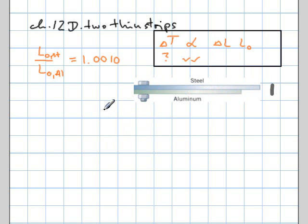So when everything is done, the length expanded by the steel equals the length, the total length, expanded by the aluminum.